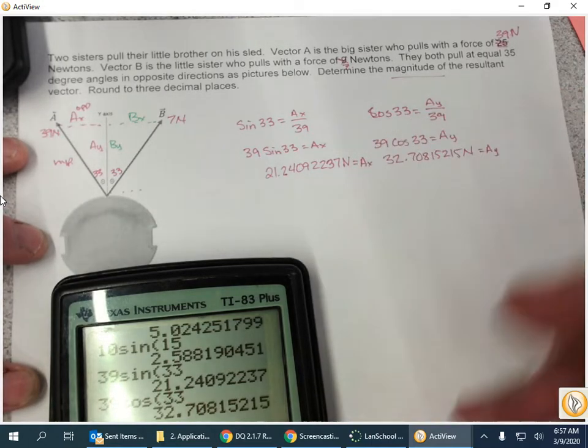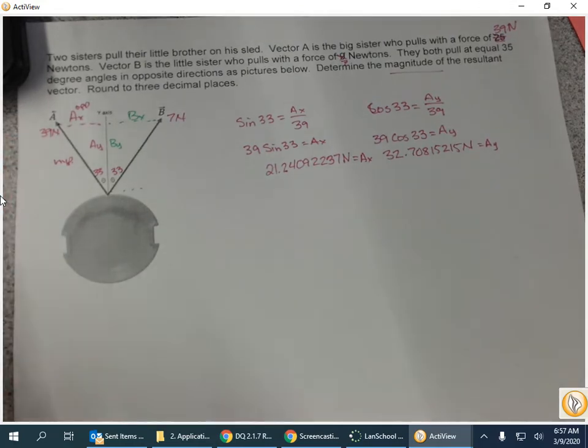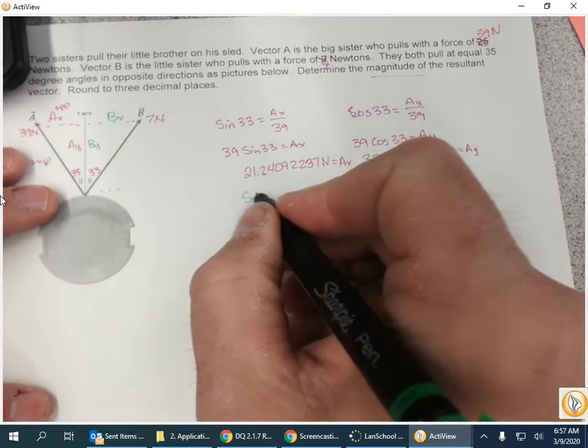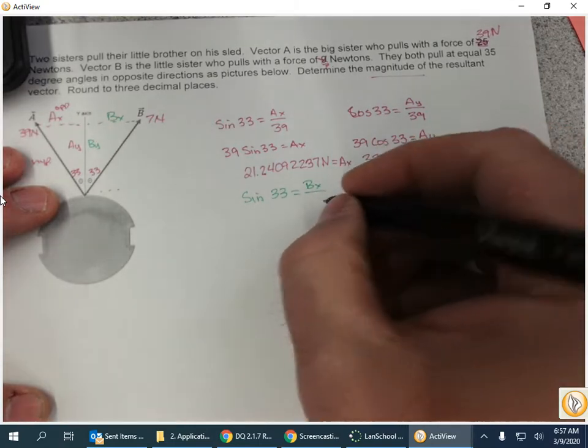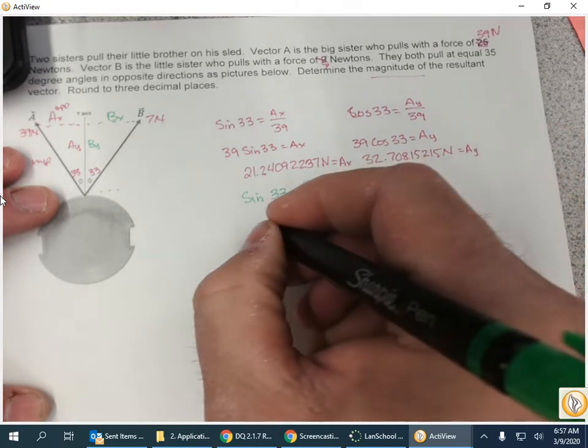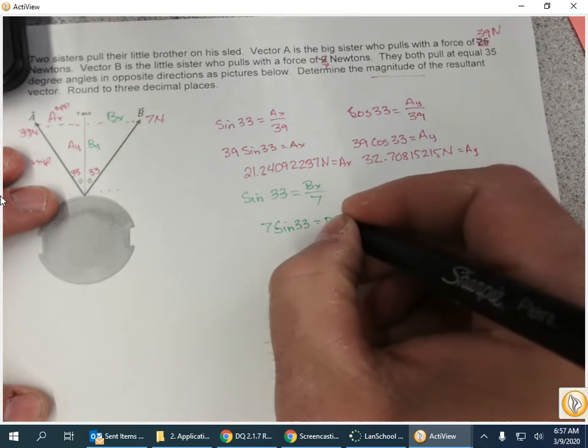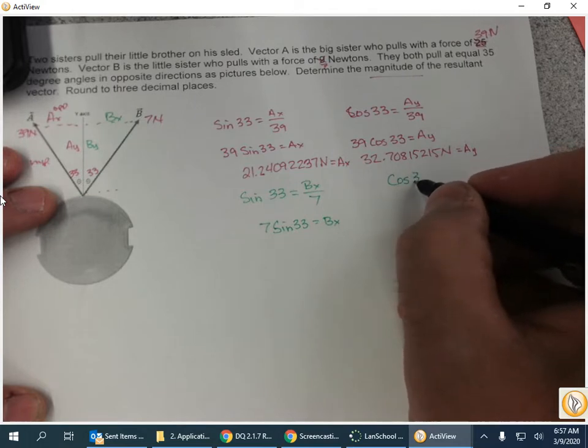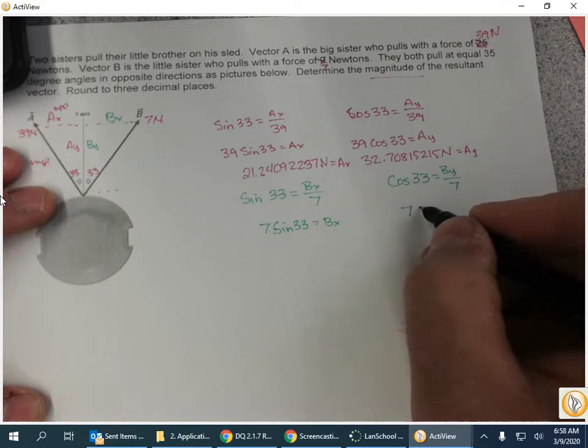All right, so now we got to do the exact same thing but for our other vector, which is vector B. So in this case it would be sine 33 equals Bx over 7, so 7 times the sine of 33 will be our Bx.